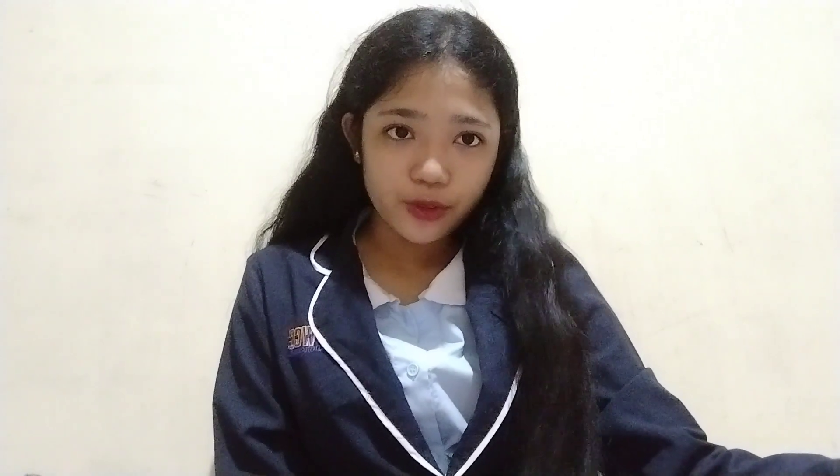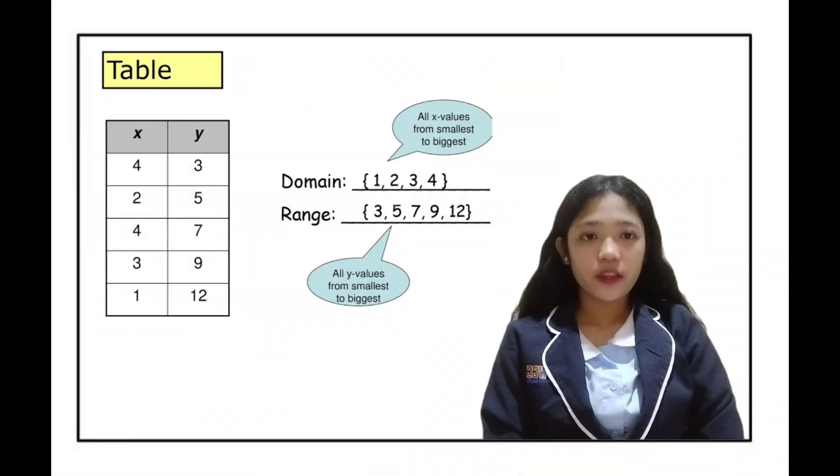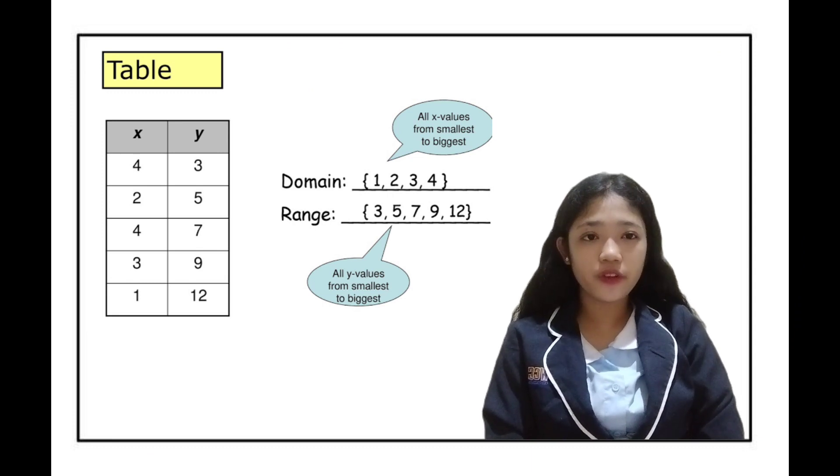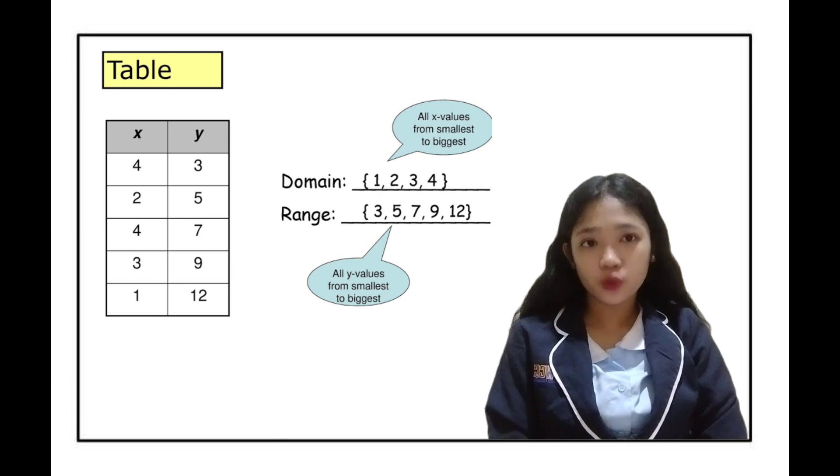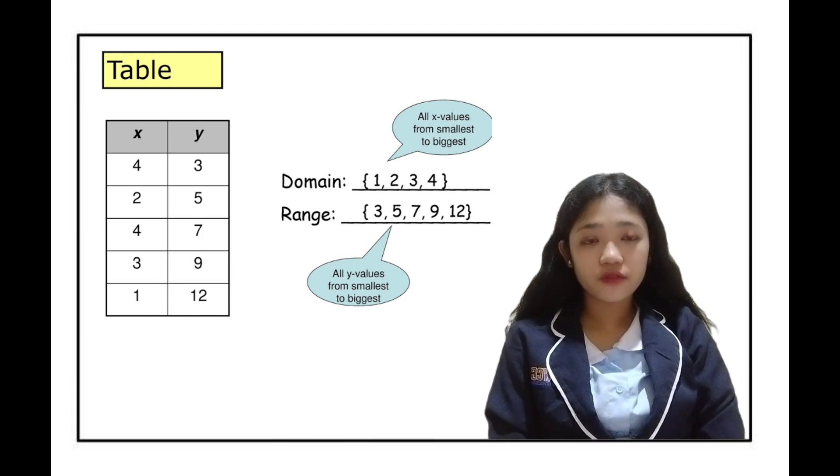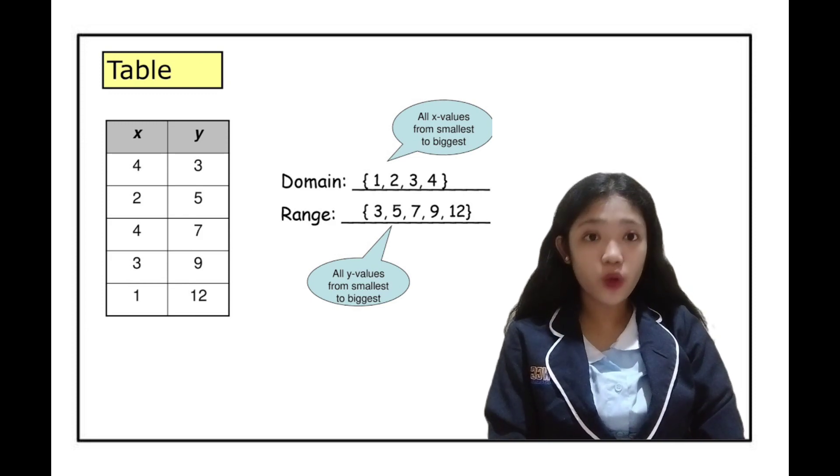Now let's move on to our table of values. X represents the domain and Y represents the range. So, the domain is 1, 2, 3, and 4. And then the range is 3, 5, 7, 9, and 12.